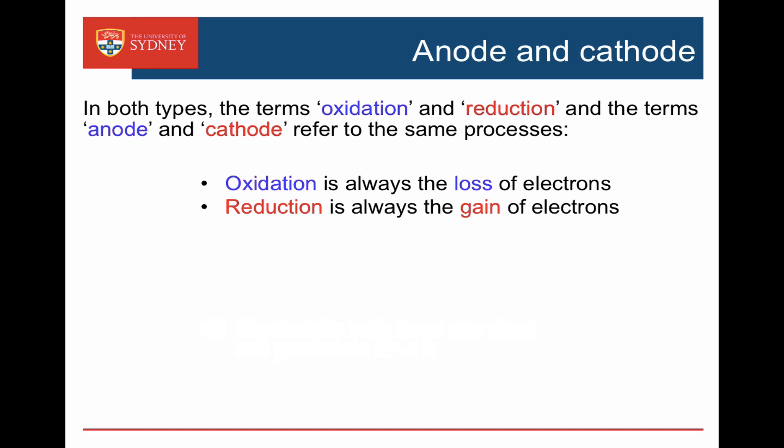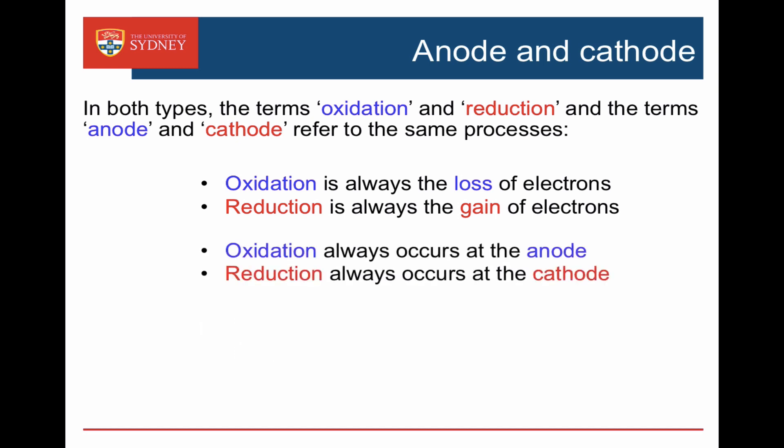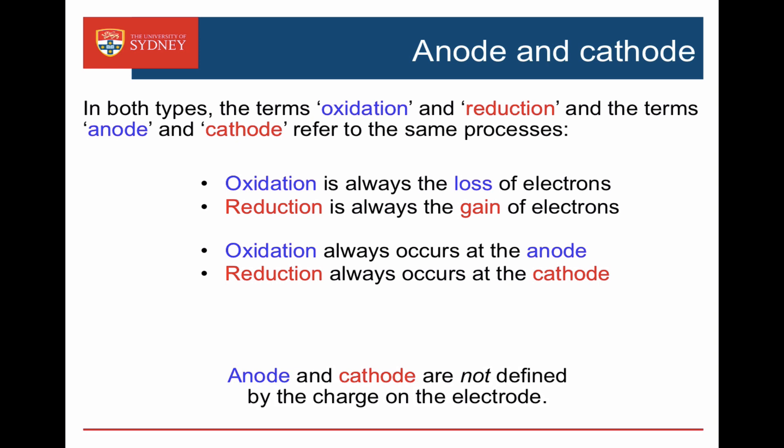In both types of cells, the terms oxidation and reduction, and the terms anode and cathode, refer to the same processes. Oxidation is always loss of electrons, reduction is always gain of electrons, and oxidation always occurs at the anode, reduction always occurs at the cathode. The names anode and cathode aren't defined by the charge on the electrode — they're defined by what happens.